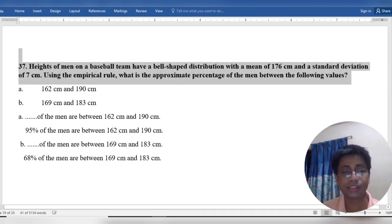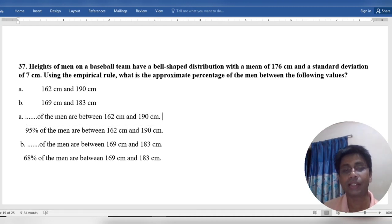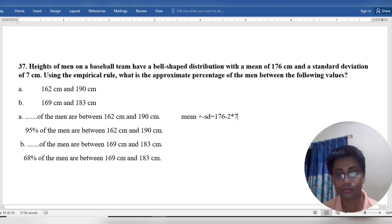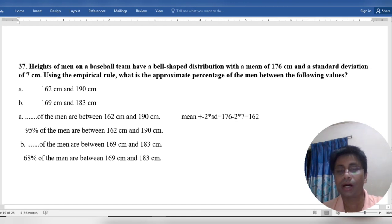What is the percentage of the men between 162 and 190 cm? We know that the 68-95-99.7 rule is mean plus minus standard deviation. Here mean is 176 minus 2×7 (two standard deviations) equals 162. We can see this is two sigma limit difference from the mean, so 95 percent confidence interval.